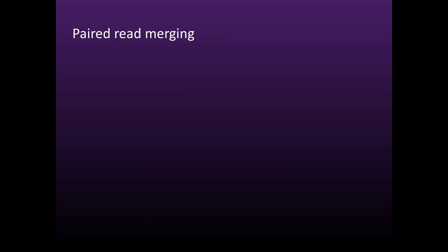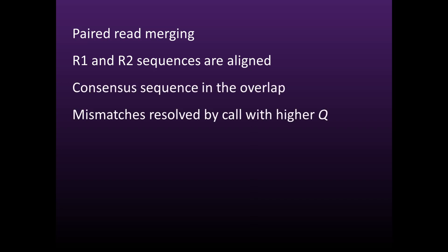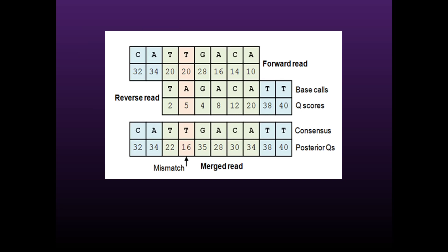With paired read merging, the R1 and R2 sequences are aligned to each other to get a consensus sequence in the overlapping segment. Mismatches are resolved by choosing the base call with higher Q. Identifying the consensus sequence is straightforward, but how should we calculate the merged Q-scores?